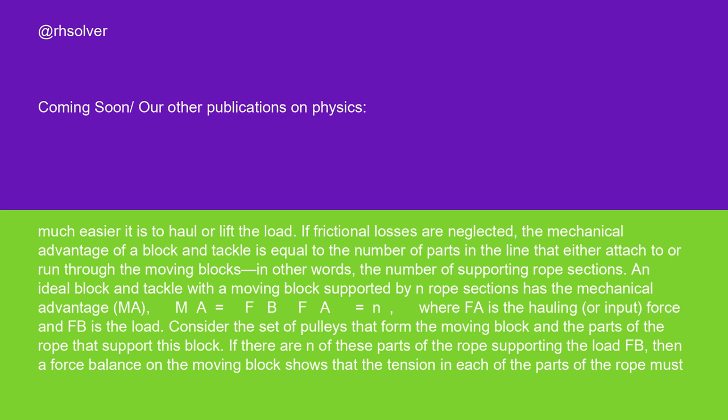If frictional losses are neglected, the mechanical advantage of a block and tackle is equal to the number of parts in the line that either attach to or run through the moving blocks. In other words, the number of supporting rope sections. An ideal block and tackle with a block supported by N rope sections has the mechanical advantage MA = FB / FA = N, where FA is the hauling or input force and FB is the load.